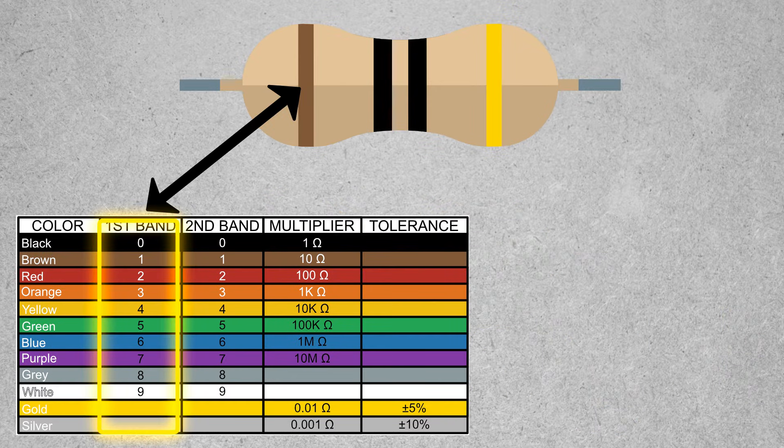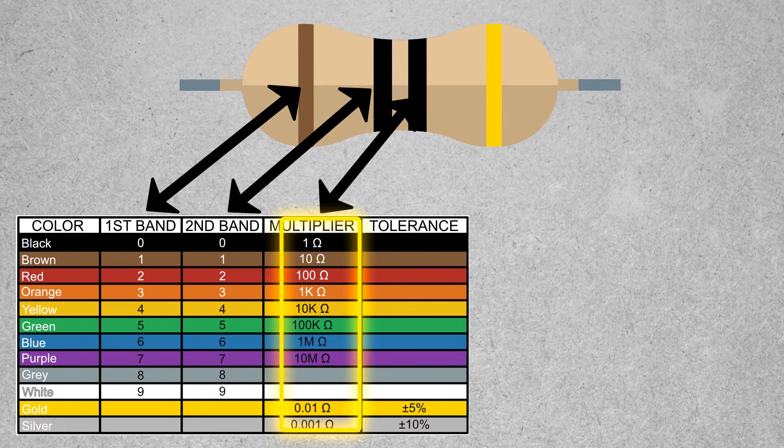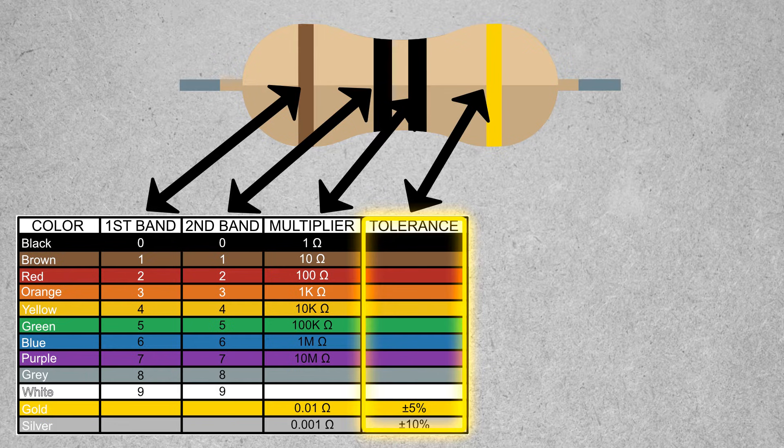The first band gives us the first digit of our resistor. The second band gives us the second value of our resistor. The third band gives us a multiplier. And then finally the fourth band gives us the tolerance.